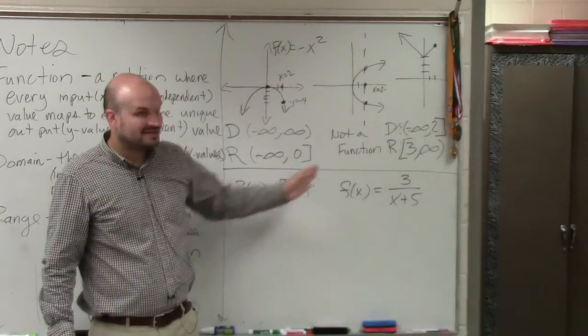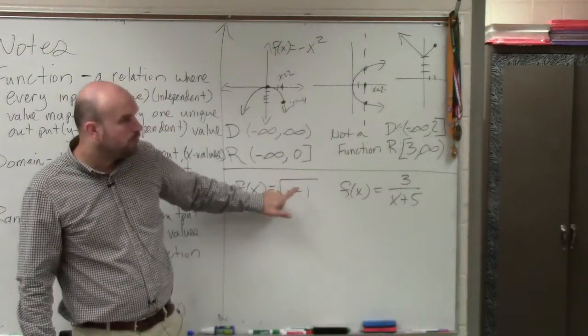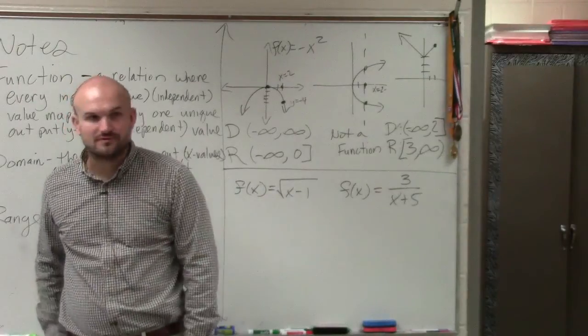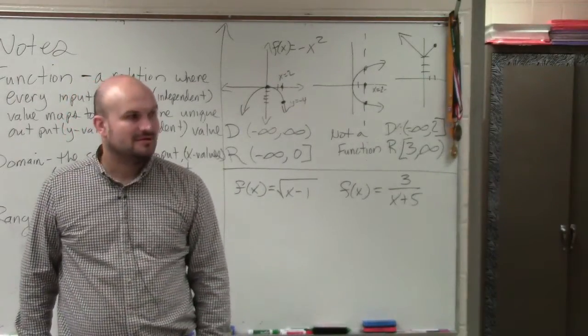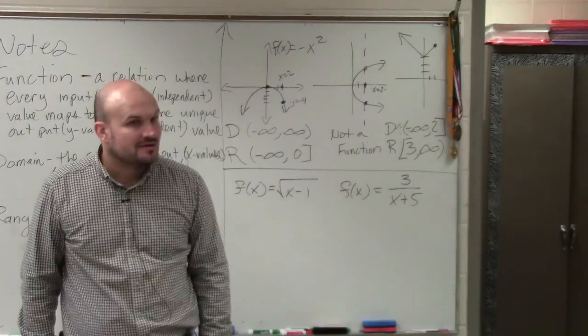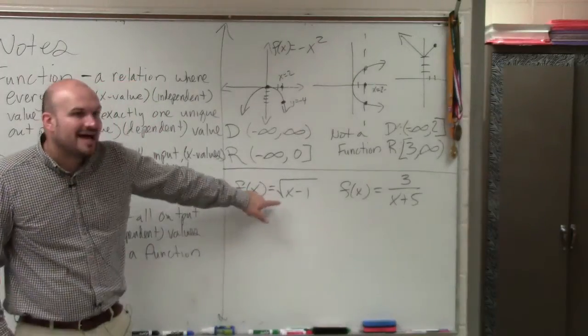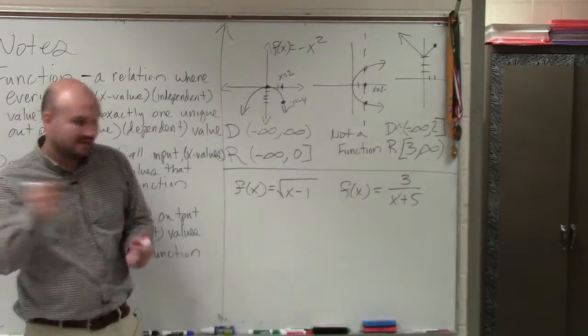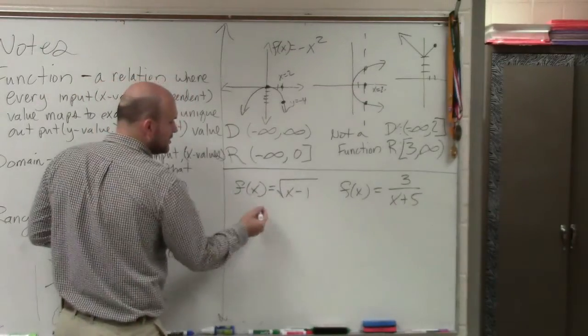Now, let's look at these two examples. What values can I not take the square root of? Yeah? Negative. Negative. So which values are going to make this negative?